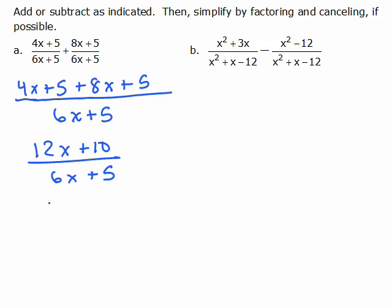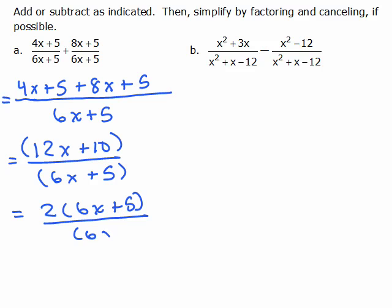So that gives me 12x plus 10 over 6x plus 5. And no, you cannot cancel the 10 and the 5 or the 6x and the 12x. You have to factor. So I can factor a 2 out of the top and that's a 6x plus 5 and I can't factor out of the bottom. But how convenient, 6x plus 5s cancel and so my answer is just the number 2.